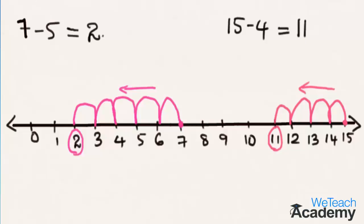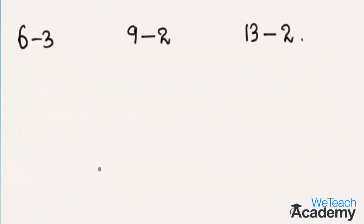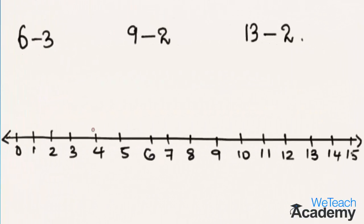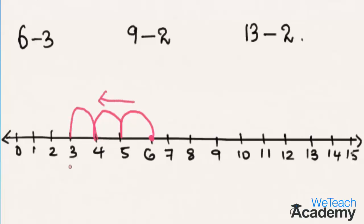Let us proceed and consider a few more examples. The next example is 6 minus 3. We start from the number 6 and move 3 steps towards the left on the number line, and we reach the number 3. So 6 minus 3 is equal to 3.